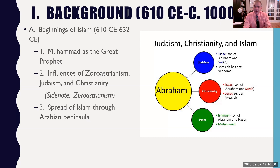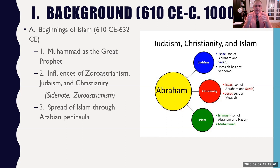610 CE is a significant year within Islam because it's the year that Muhammad, a merchant from the city of Mecca, has a revelation. He is visited by the angel Gabriel, who reveals to Muhammad that he is the last and greatest prophet of Allah, or of God. Muhammad begins from 610 CE till his death in 632 CE proclaiming the message of Allah and the revelation of Allah through Muhammad. Muhammad is seen as this great prophet of Allah.